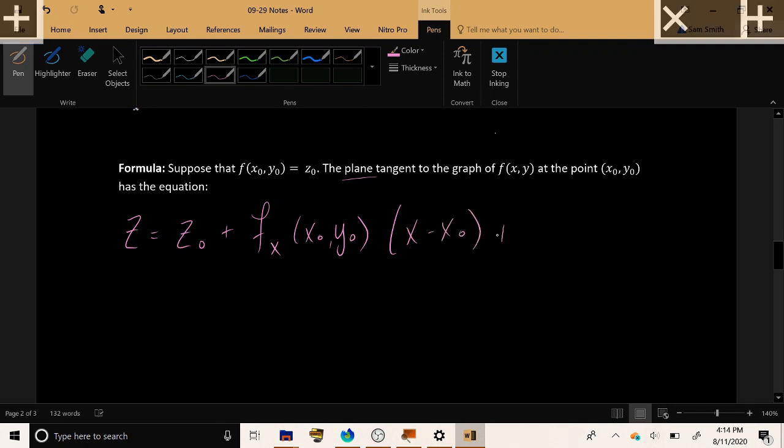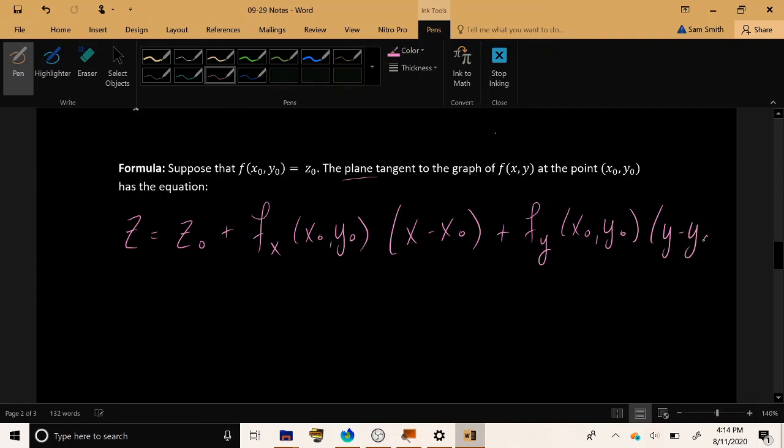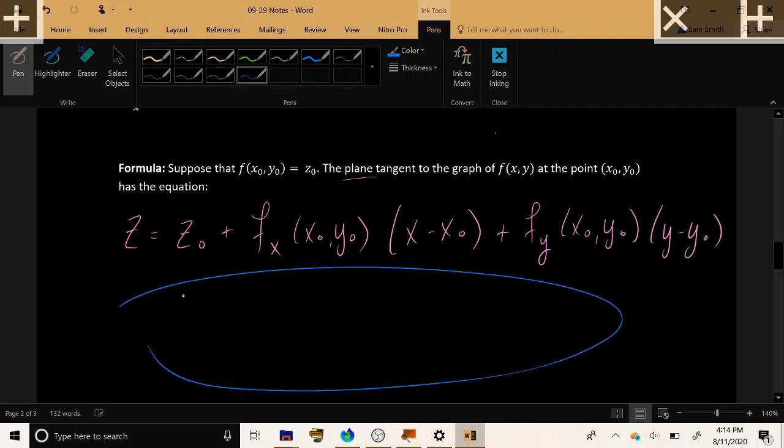Take the derivative in the y direction at the given point, multiply that by y minus y naught.